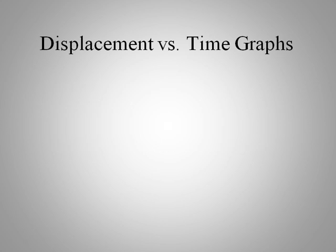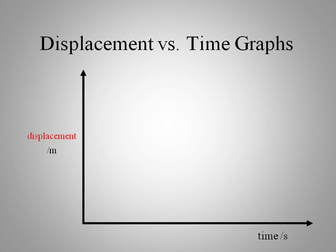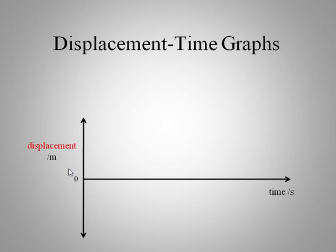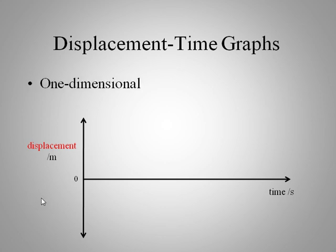A displacement versus time graph could look something like this — it's just a quadrant one plot. But it could also look like this, because displacement is a vector, so it could be negative. We have regions in quadrant one and four. Displacement is one dimensional: it can go forward or backward, positive being forward, negative being backward.